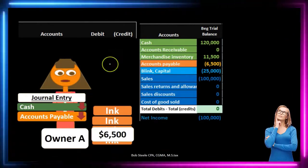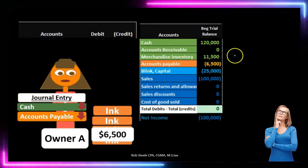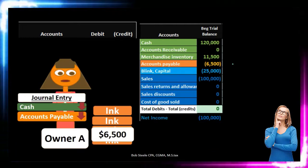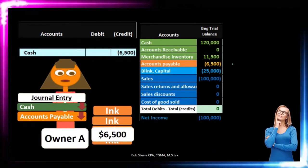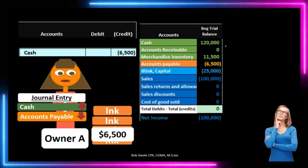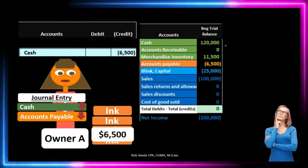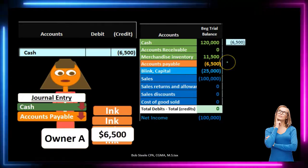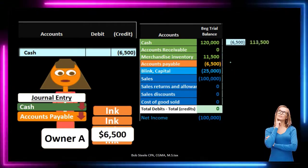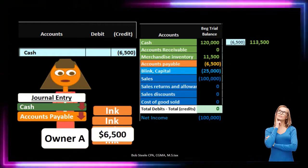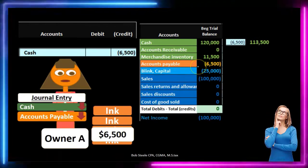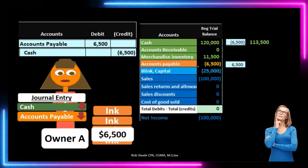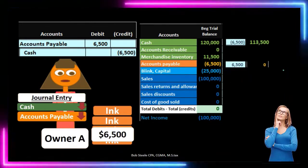Let's take a look at that journal entry on the left-hand side and post it to the trial balance on the right-hand side, where we now have inventory of $11,500 and a payable of $6,500 credit. Cash is going to go down, so we credit cash — it has $120,000 in it. Thinking about cash first is the easiest way to know if it's a debit or credit. Posting that out: we go from $120,000 with a credit of $6,500 to $113,500. The debit will then reduce the accounts payable account — we have $6,500 credit in it, and doing the opposite brings the balance back down to zero.